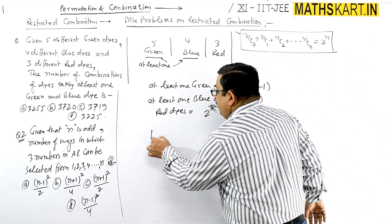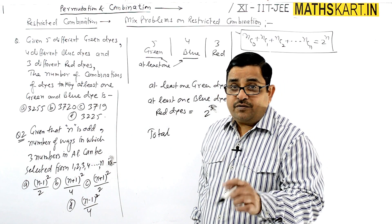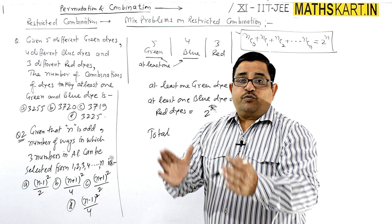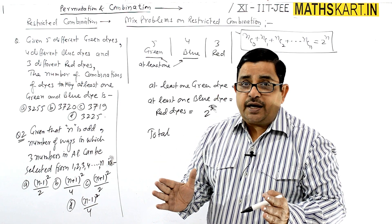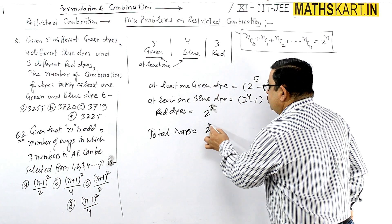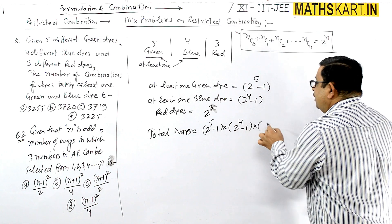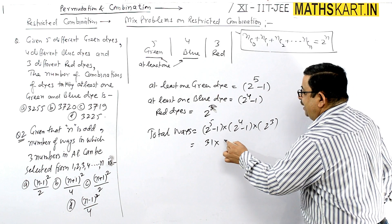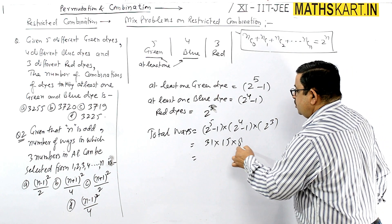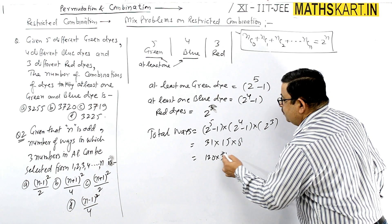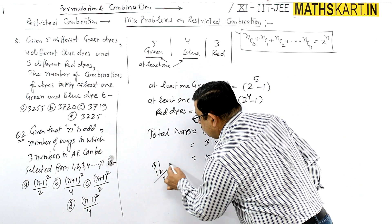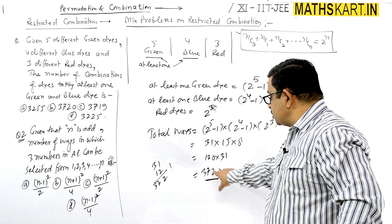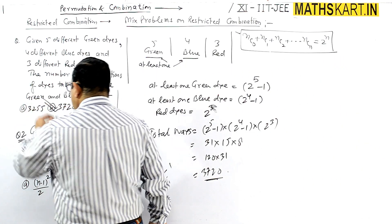We multiply all three values together because of the law of multiplication — the three selections are independent. Total number of ways = (2^5 - 1) × (2^4 - 1) × 2^3 = 31 × 15 × 8 = 31 × 120 = 3720. So the answer is 3720 and option B is correct.